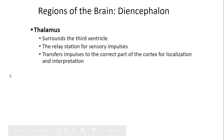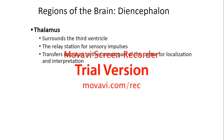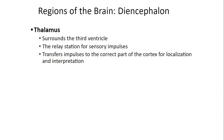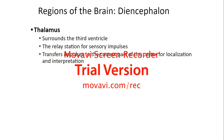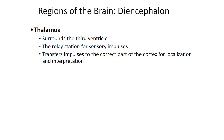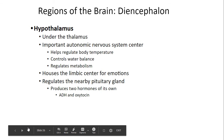The thalamus surrounds the third ventricle and is the relay station for sensory impulses. It transfers impulses to the correct part of the cortex for localization and interpretation. Sensory information comes up from the spinal cord through the brainstem to the thalamus, and then from the thalamus it is relayed to different locations of the cerebrum.